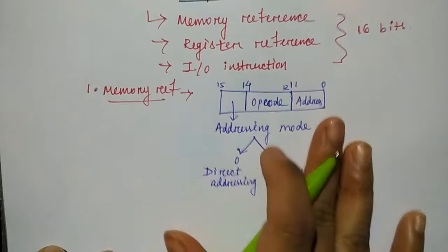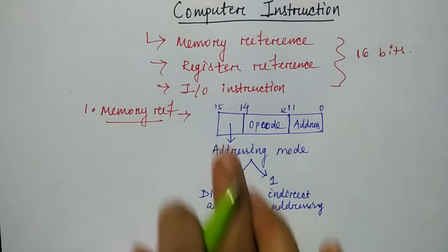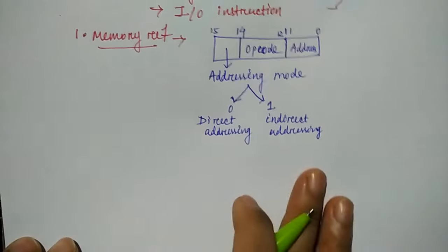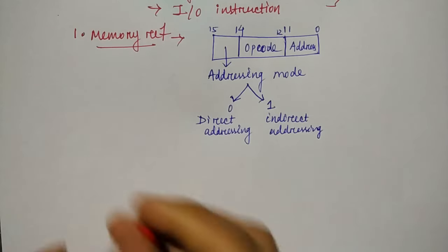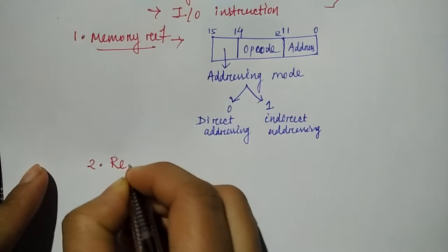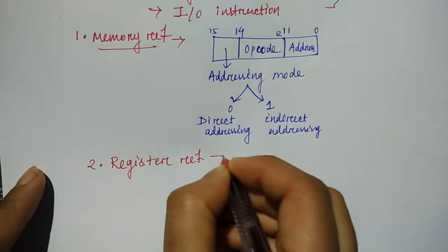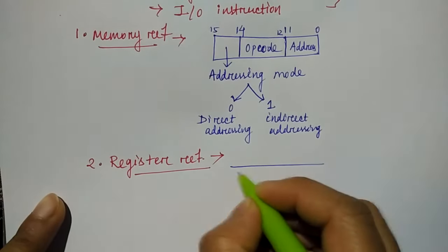You have to use the same way, then you have to use your memory reference. This means the opcode and address work is found. In this case, we have to use the first part, you have to get to know the address mode. In this case, you have to show the direct and indirect addressing.